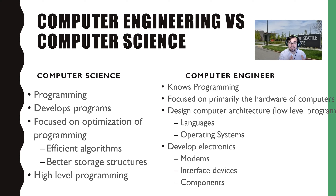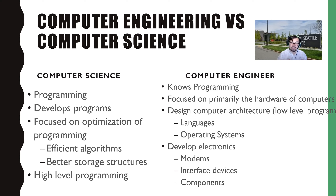In computer science, you'll be focused on optimizing programs — how do you build more efficient algorithms to do that work? Most of our work we want to automate, so we need to figure out the most effective way to do that. How do we store our data in a more efficient manner so it takes up less space and is easier to access? A lot of this is very high-level programming — far away from the hardware.